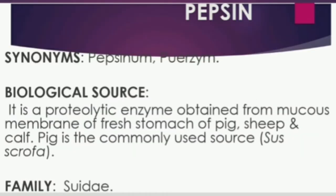Pepsin has synonyms pepsinum and purism. It is obtained from the stomach region of pig, sheep, and calf — mostly pig. The zoological name of pig is Sus scrofa, belonging to the family Suidae. The biological source is taken from the stomach region of these animals.